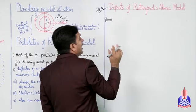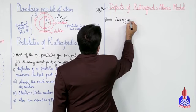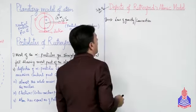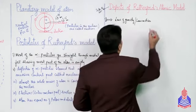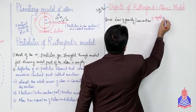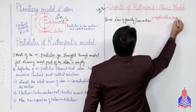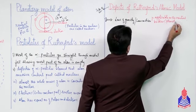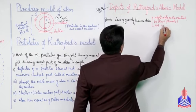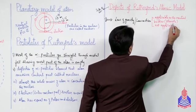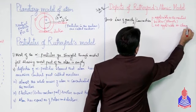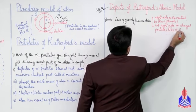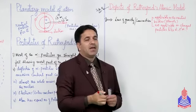Rutherford کے atomic model میں defects بھی ہیں۔ پہلا defect: Rutherford نے اپنے atomic model میں law of gravity اور law of motion کو use کیا ہے، حالانکہ یہ laws neutral bodies جیسے planets پر applicable ہیں، charged particles جیسے electron اور proton پر applicable نہیں ہیں۔